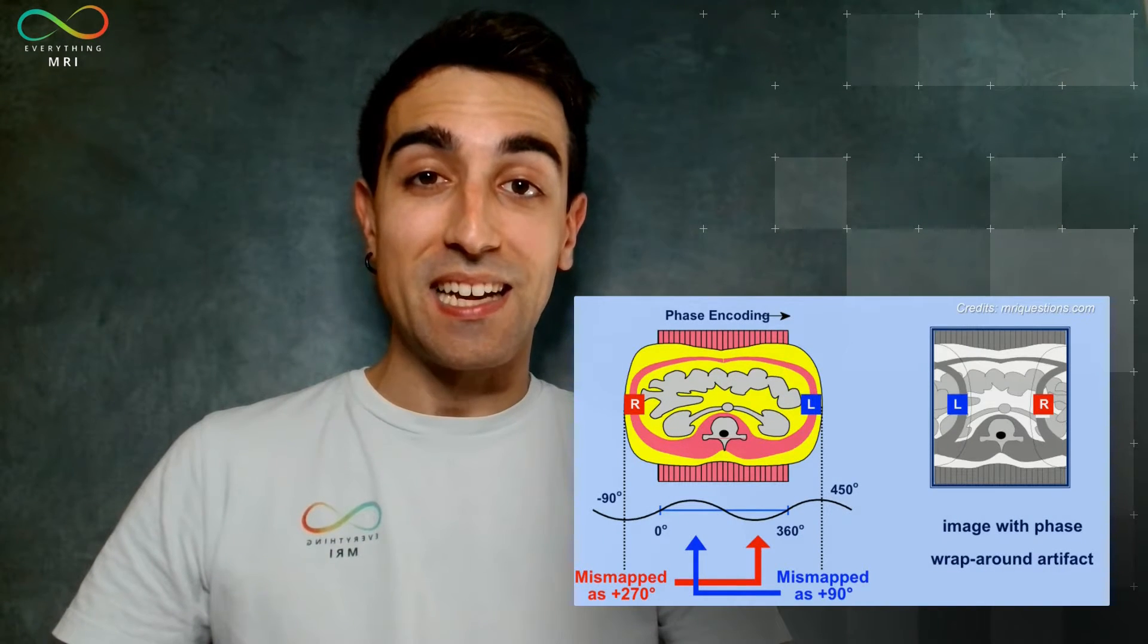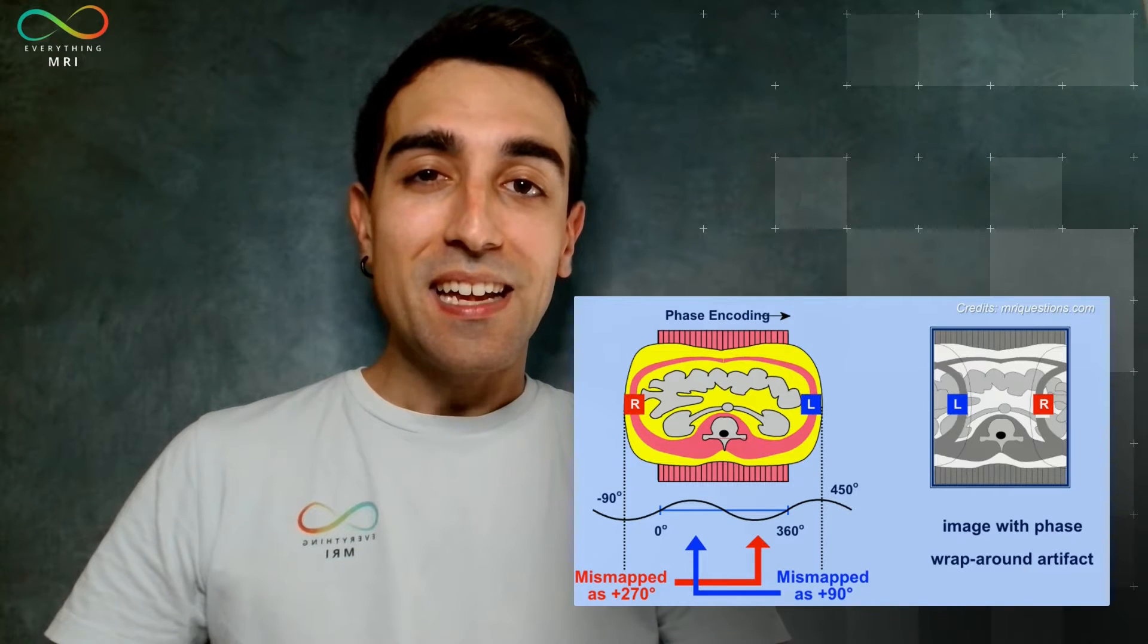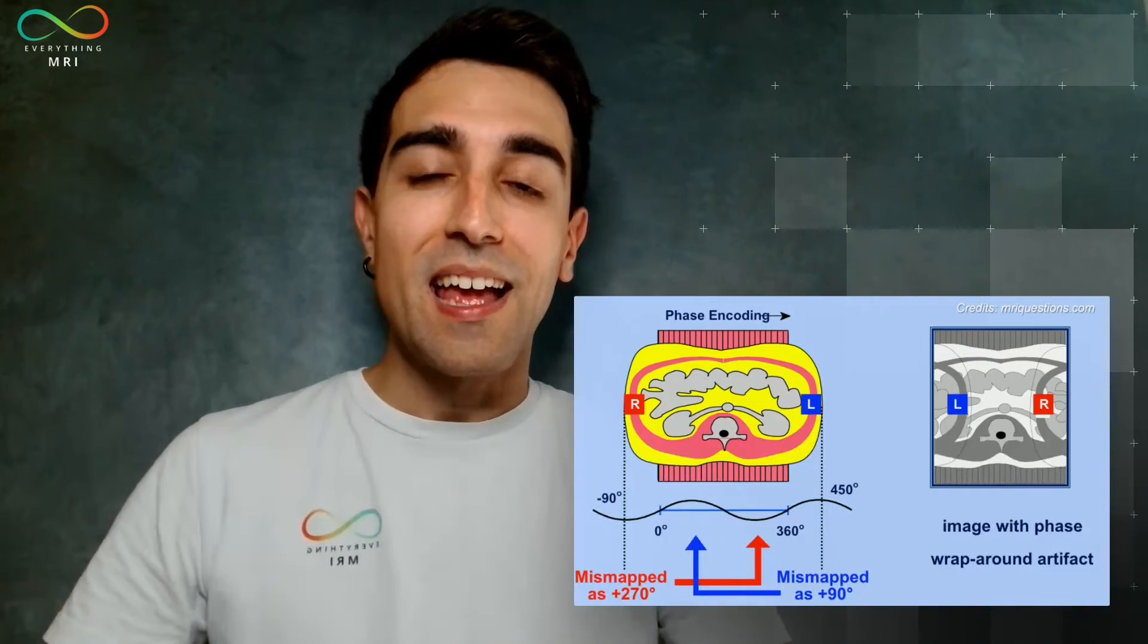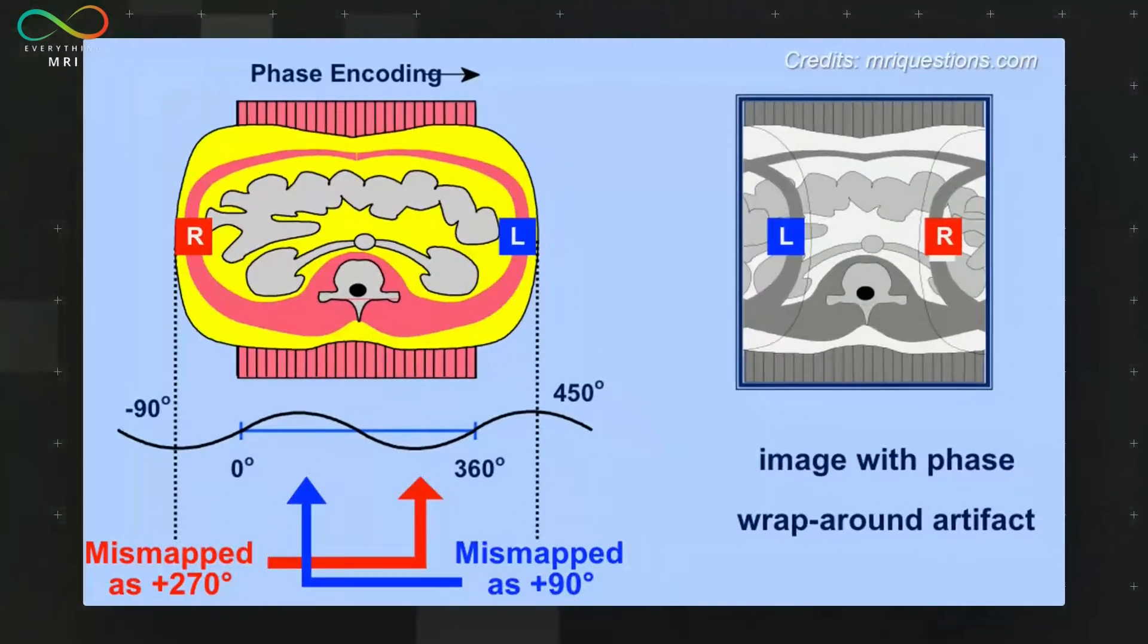A specific type of aliasing is better known as phase wrap around artifact. This occurs when the anatomical dimension of an object exceeds the defined field of view. Essentially portions of the object outside the FOV are incorrectly interpreted, facing therefore a phase shift and ending up folded over into the images from the edges.